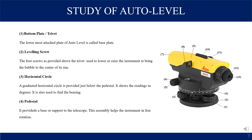Horizontal circle: a graduated horizontal circle is provided just below the pedestal. It shows readings in degrees and is also used to find the bearing. Pedestal: it provides a base of support to the telescope. This assembly helps the instrument in free rotation.